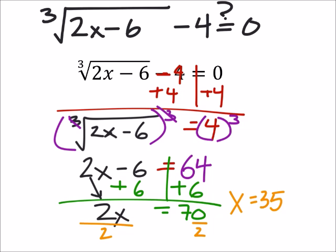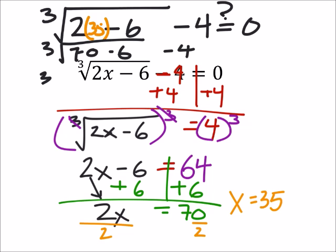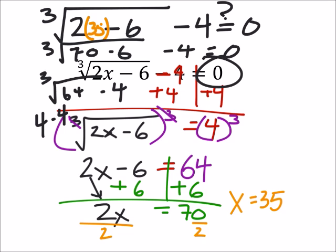Well, let's go ahead and replace x with 35. And what does this give us? The cube root of 70 minus 6, and then we'll subtract four. 70 minus 6, so that gives us the cube root of 64. When we subtract four, again, this should equal zero. The cube root of 64 is four. So what's four minus four? It is zero.